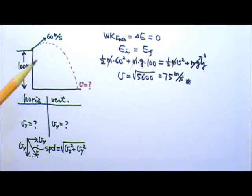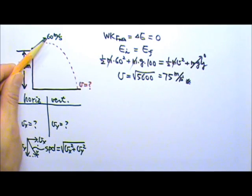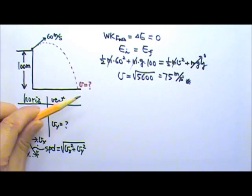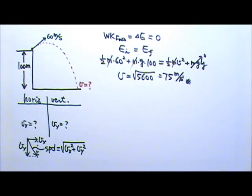Of course, this also means the angle does not matter. As long as the projectile is shot at 60 meters per second, no matter the angle, even if it's shot at an angle below the horizontal, the landing speed would be the same 75 meters per second.